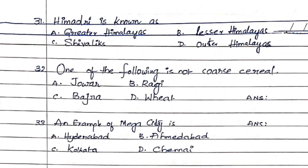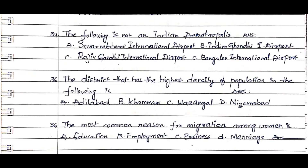Question 34: The following is not an Indian Aerotropolis. Option A. Suvarnabhumi International Airport, Option B. Indira Gandhi International Airport, Option C. Rajiv Gandhi International Airport, Option D. Bangalore International Airport. The answer is Option A. Suvarnabhumi International Airport.